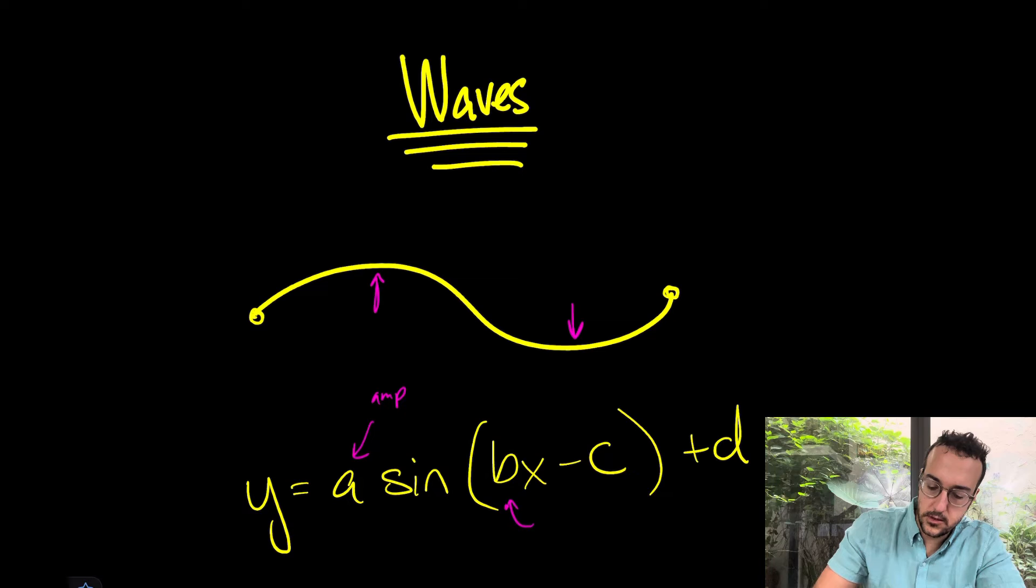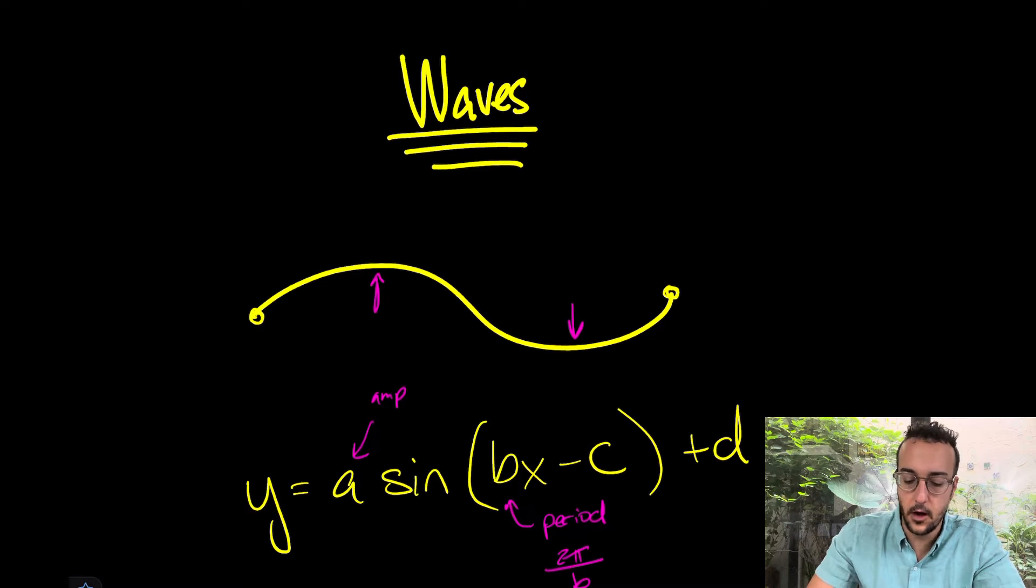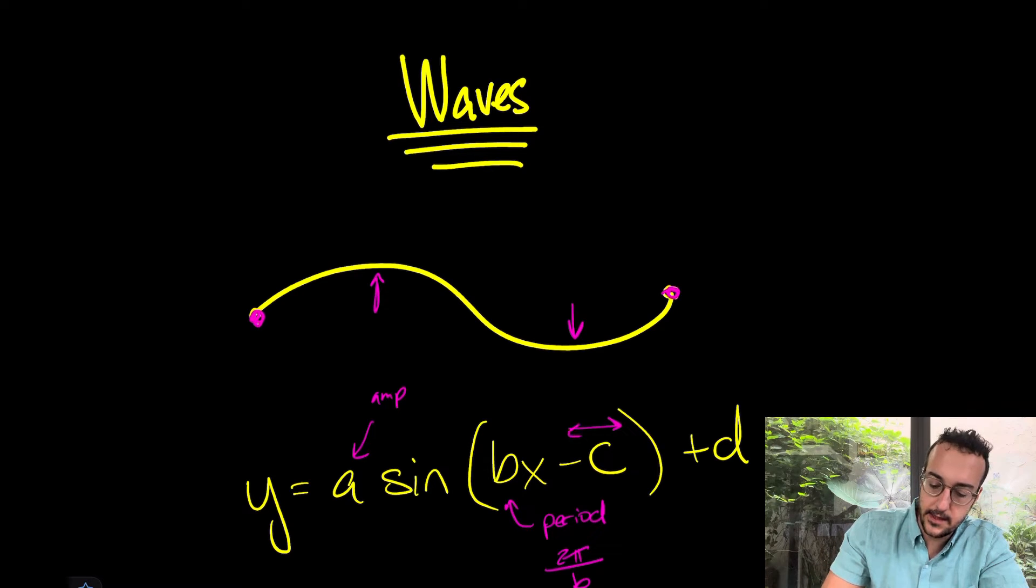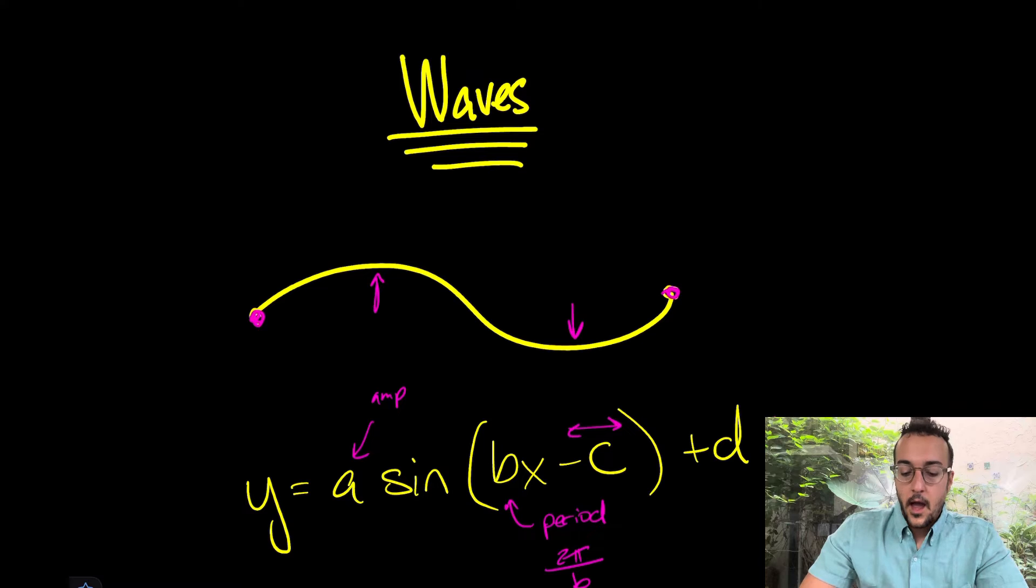Your B is going to be associated with your period. The period of the wave is how long it takes to complete. The formula is 2π over B. 2π over B will always give you your period. Essentially from start to finish is one period. From there we also have a shift, a translation C and D. C is a translation left and right, while D is a translation up or down.